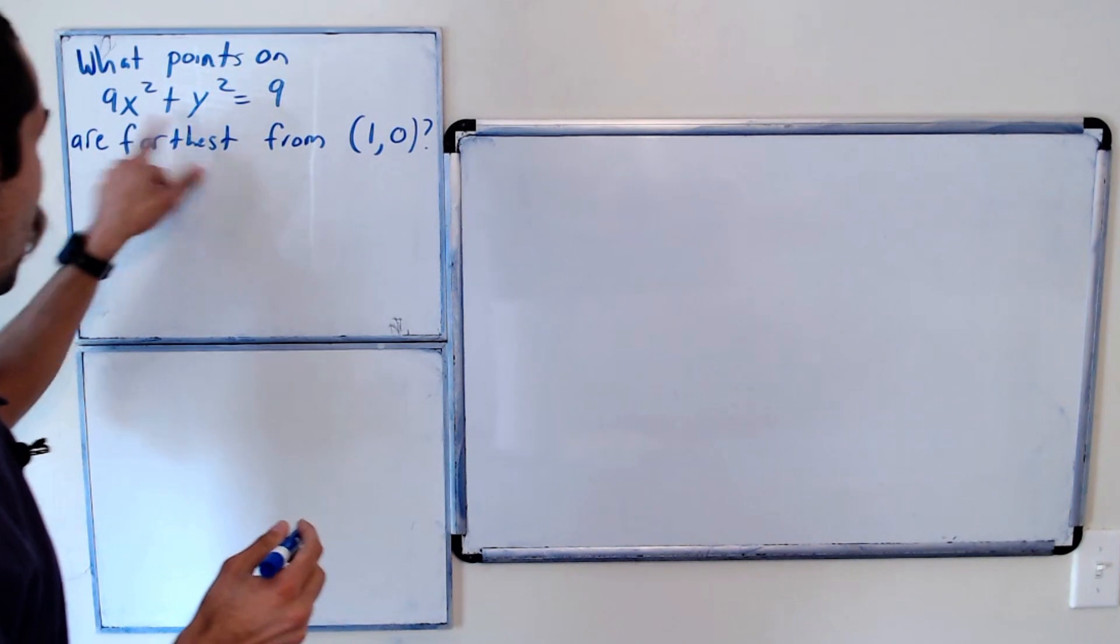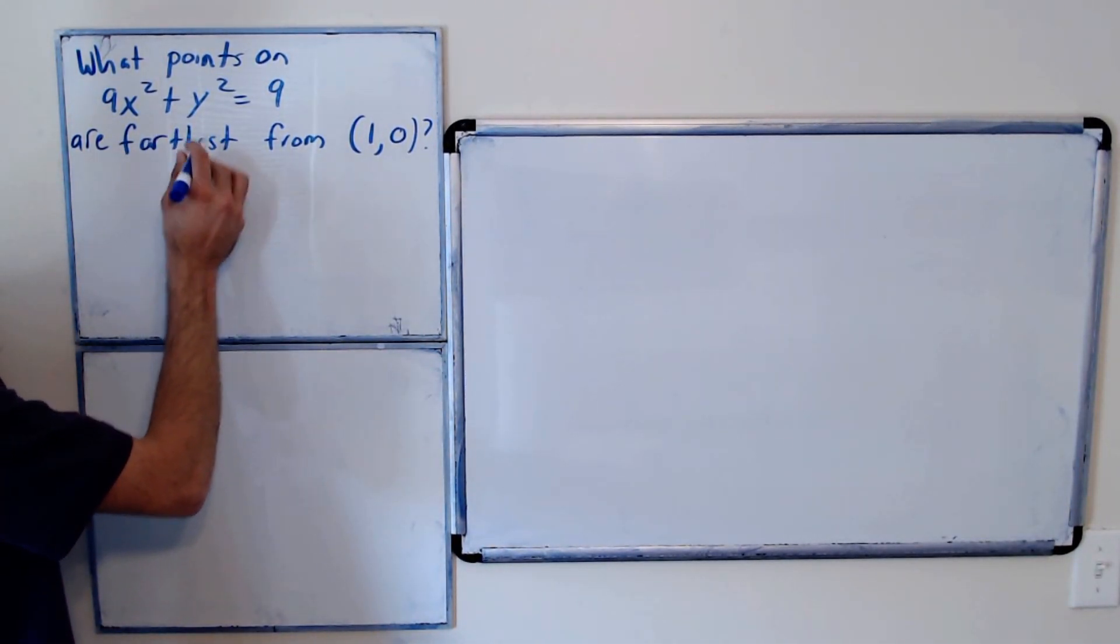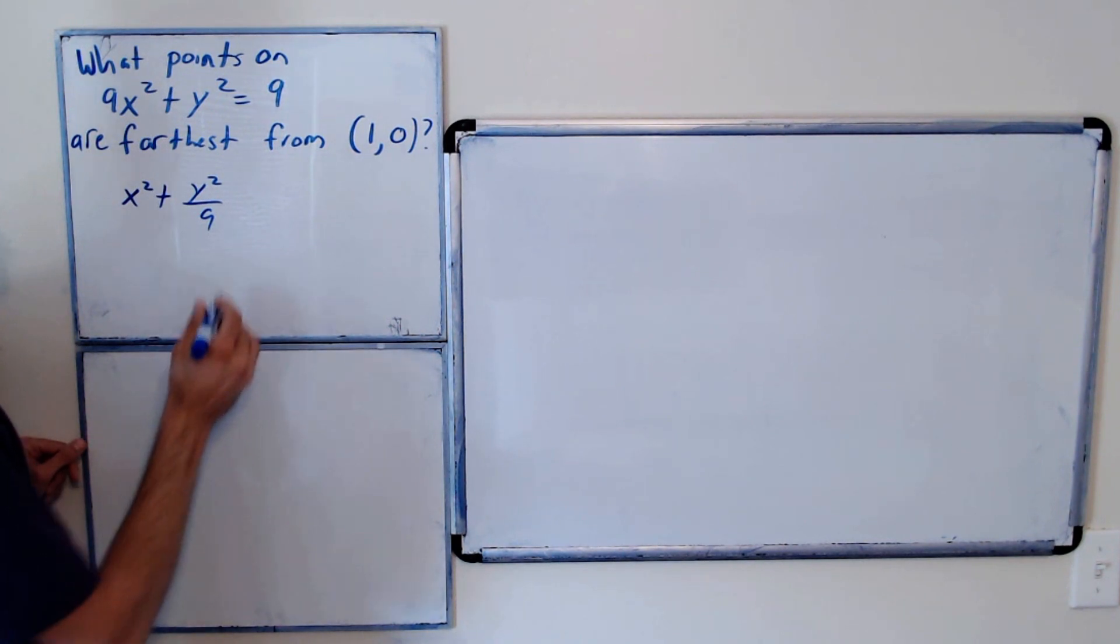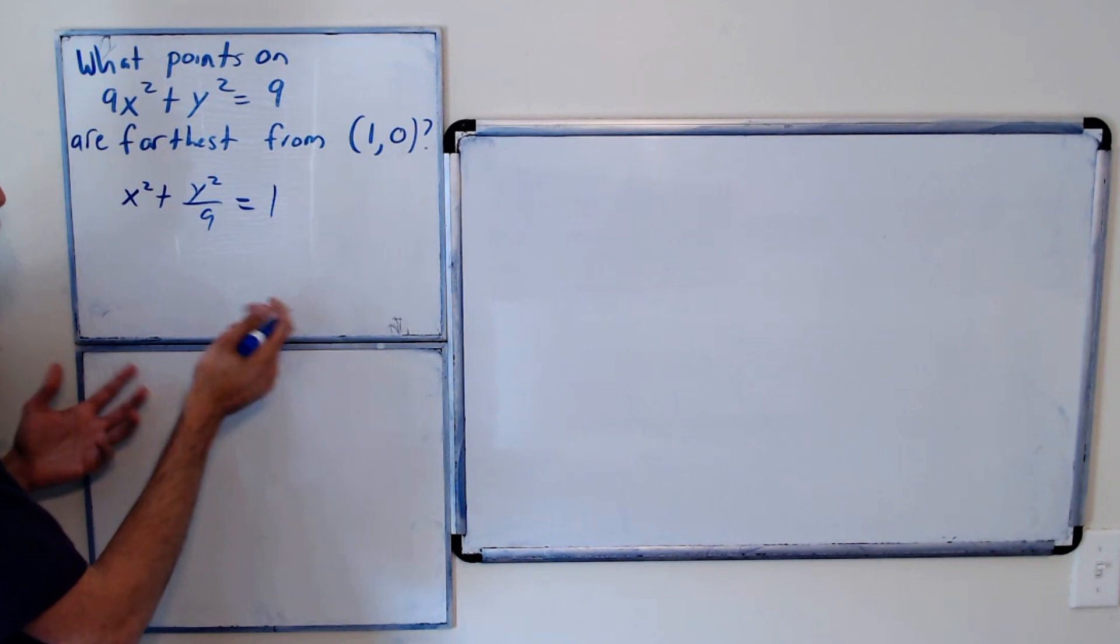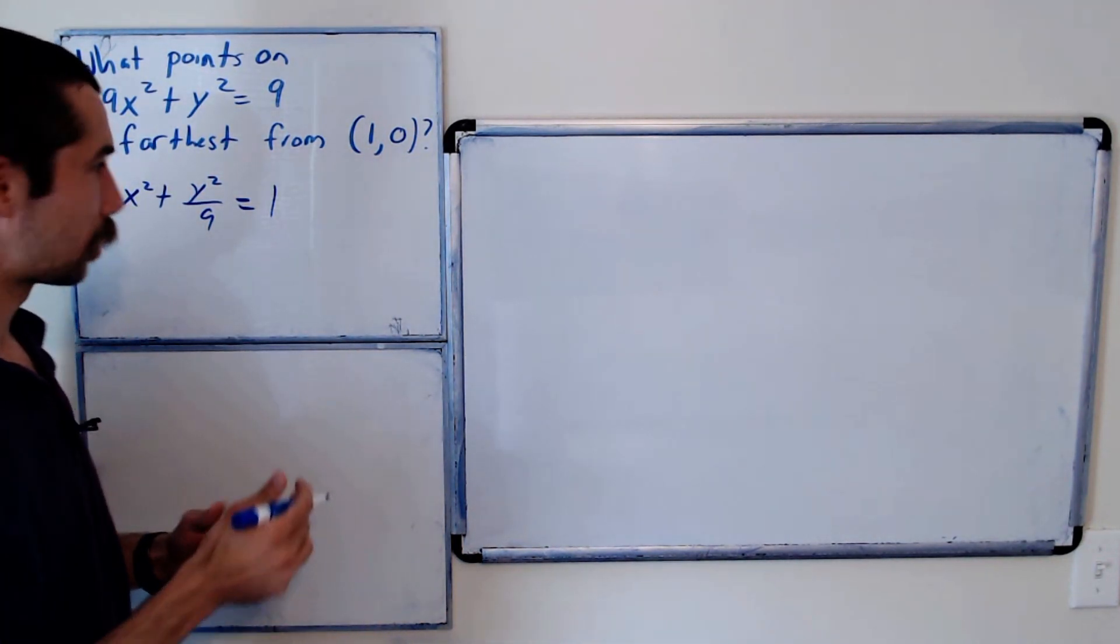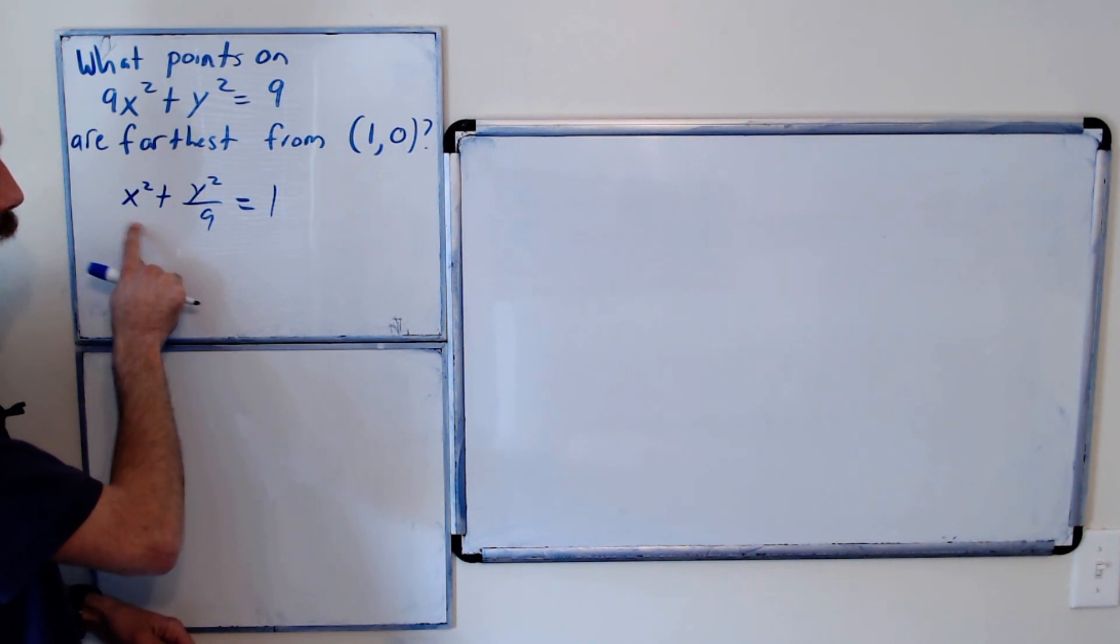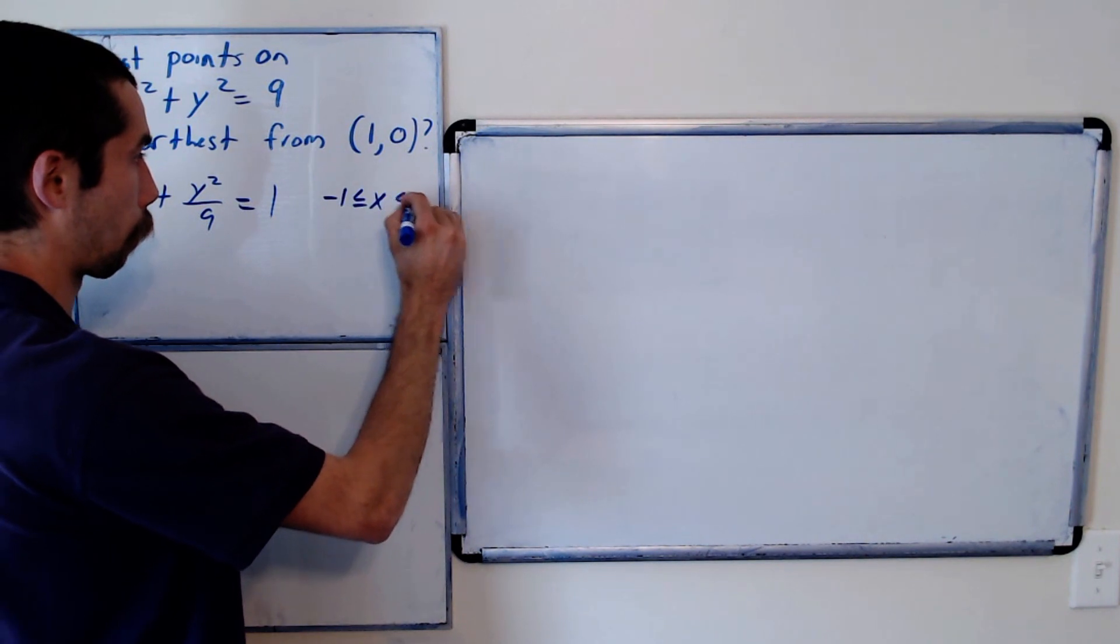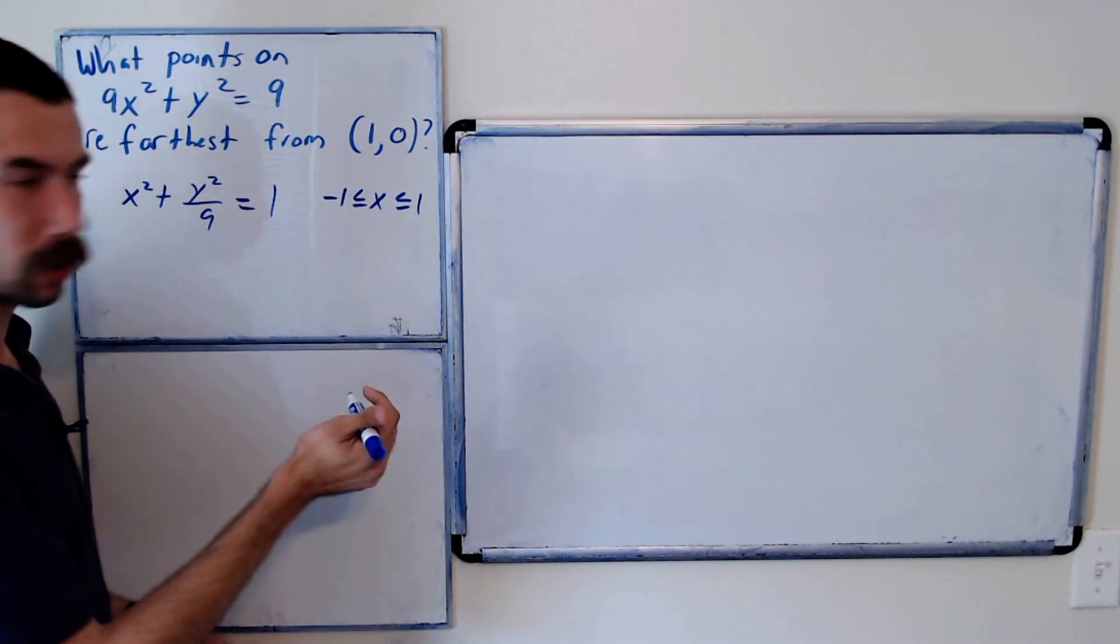Let's start by writing our ellipse in standard form. Dividing by 9, we have x squared plus y squared over 9 equals 1. We know from when we learned about ellipses that the largest value x could be is 1 and the smallest is negative 1. Similarly, the largest value y could be is 3 and the smallest is negative 3.